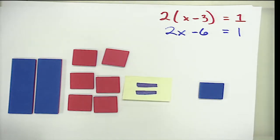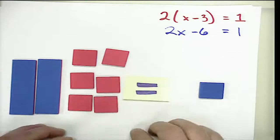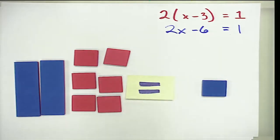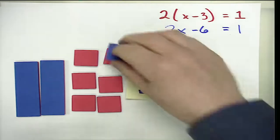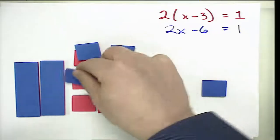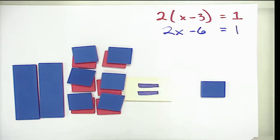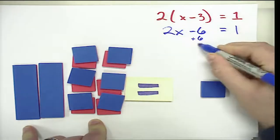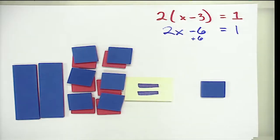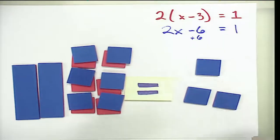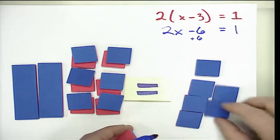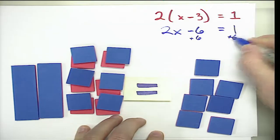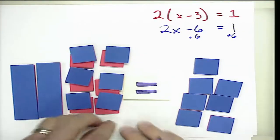Now we need to use inverse operations to isolate the X value — constants go to one side, X values to the other. We have a negative six with our X's, so we want to move it to the other side by creating a zero pair. We add six positives to the left side, writing plus six, and because we do that to the left we must also add six to the right expression to maintain equivalence.